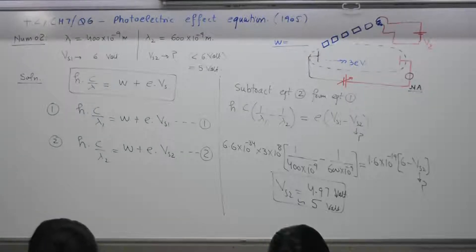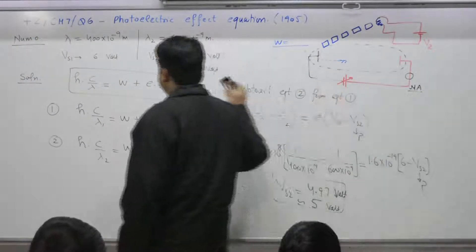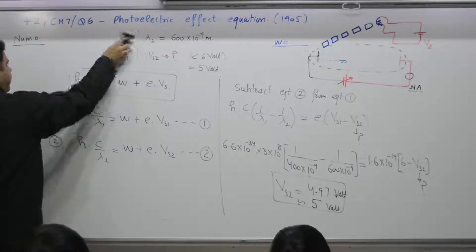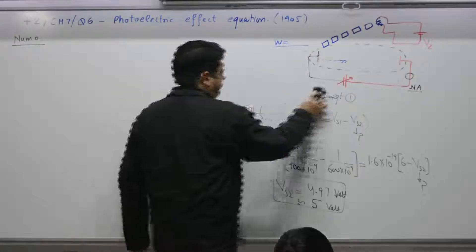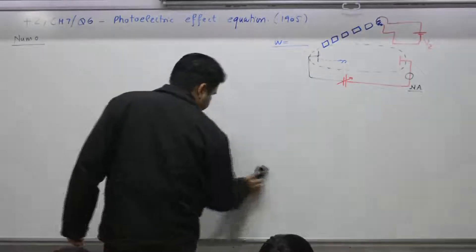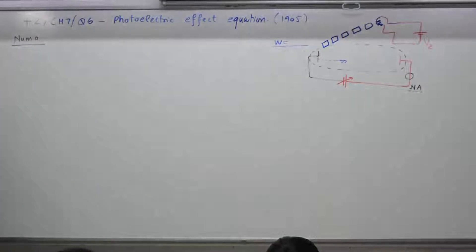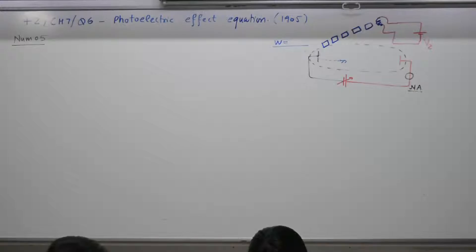Refer to numerical number 5. Numerical 5: Light of wavelength 2000 angstrom falls on an aluminum surface. In aluminum, 4.2 electron volts are required to remove an electron. What is the kinetic energy of (A) the fastest and (B) the slowest emitted photoelectron?